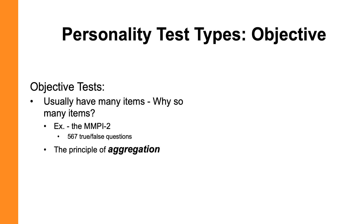This idea of measuring the same thing many times is called aggregation. You can measure the same construct with multiple items, or measure it with a personality test over multiple occasions — there are different ways to aggregate. The bottom line is that you're combining scores for the construct or trait you want to measure, and averaging or summing those scores allows any error associated with any one measurement or item to be reduced. That's one of the main reasons why objective personality tests often have a large number of items.